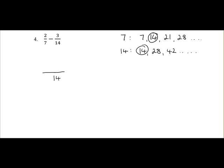We're converting 2 over 7 into whatever it is over 14. So 7 to 14 goes twice, 2 times 2 is 4. So 2 over 7 is the same as 4 over 14.